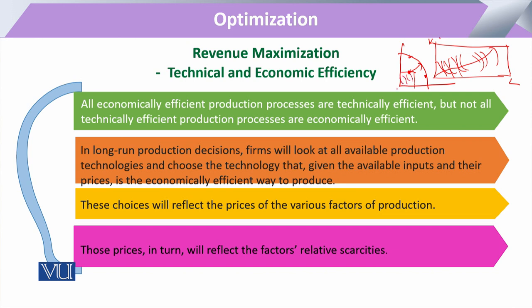The producer is producing at those points where they are technically efficient. In the long-run production decision, various firms must look at available production resources — labor, quantity of labor, amount of capital, and available technology. They must select only the available inputs, and the main factor confronting them is the price of those inputs. Those choices reflect the prices of various factors of production.